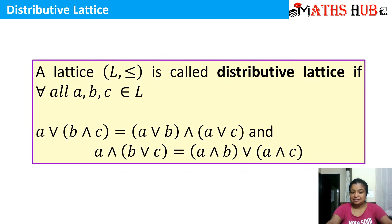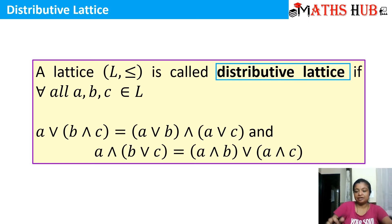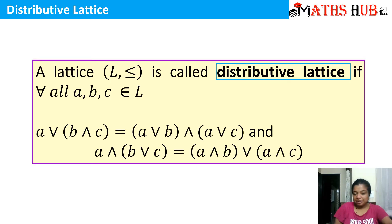Let's come to the definition of a distributive lattice. A lattice L with less than or equal to relation is called distributive if for all A, B, C belonging to L: A join (B meet C) is equal to (A join B) meet (A join C). And similarly by the principle of duality, A meet (B join C) is equal to (A meet B) join (A meet C).